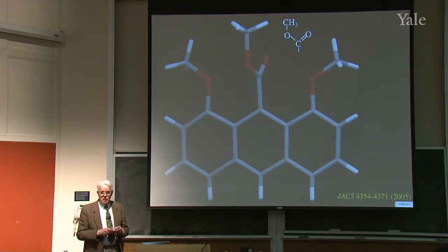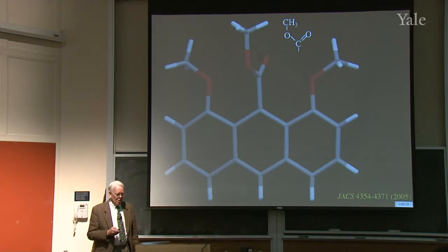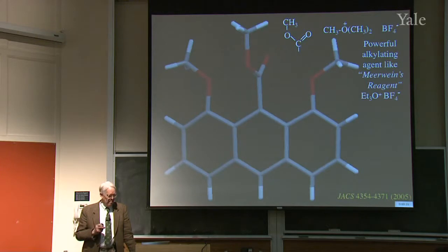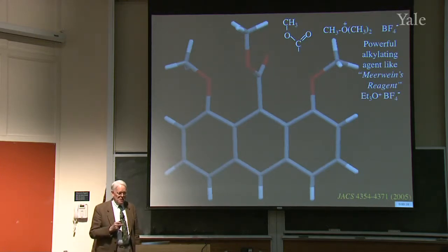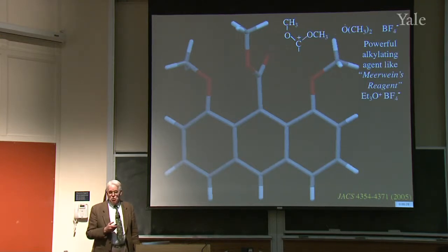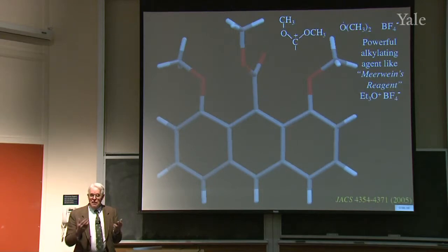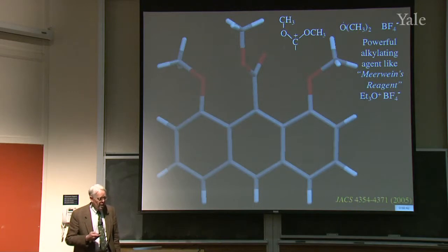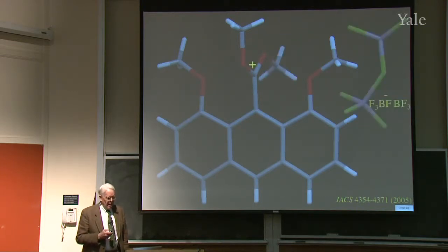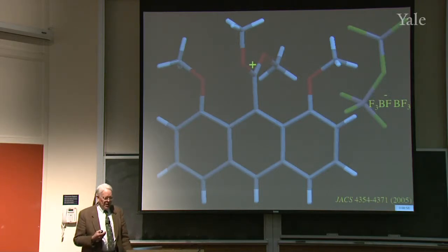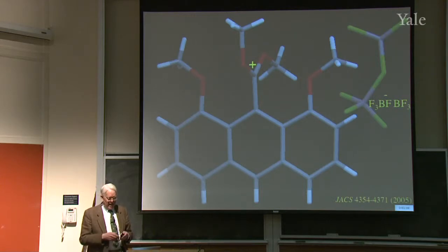The thing in the middle started as an ester, but we want it to be a cation with a vacant p orbital in the middle. So you react it with Meerwein's reagent, which is a way of giving methyl groups. It's got a great leaving group on it, dimethyl ether. So we can have a substitution reaction and put a methyl group on, and now the carbon has a positive charge. Not all the positive charge is on carbon, because the unshared pairs on the adjacent oxygens are mixing with that vacant orbital.